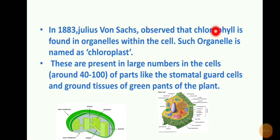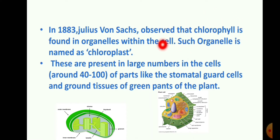In 1883, Julius von Sachs and a scientist team observed that chlorophyll, a pigment, is found in the cell organelle called the chloroplast.